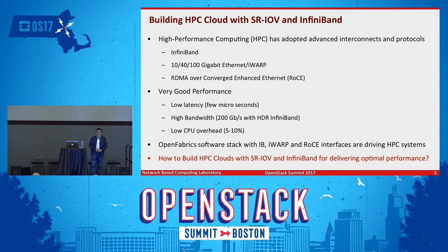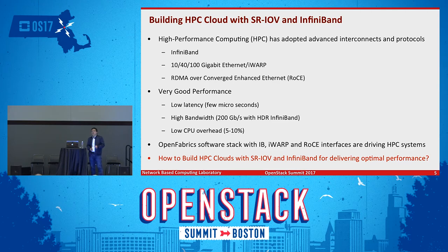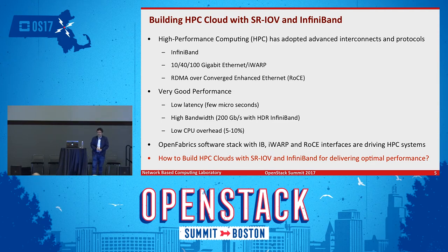To build an efficient HPC cloud, high-performance networking such as InfiniBand, RoCE, iWarp, and SR-IOV give you a lot of opportunity. From a performance perspective, InfiniBand cards can deliver a few microseconds of latency between nodes. The most advanced HDR InfiniBand card gives you 200 Gbps bandwidth. These networks typically also provide RDMA capability, so you can access remote memory directly. The question is how to build HPC clouds with SR-IOV and InfiniBand to deliver optimal performance, and what challenges remain.